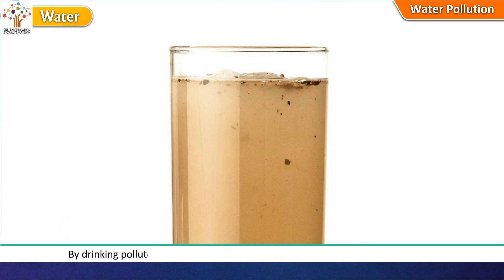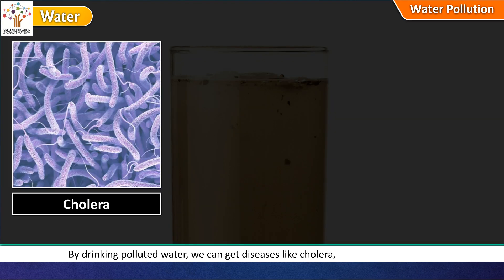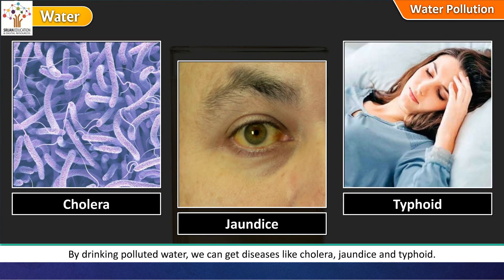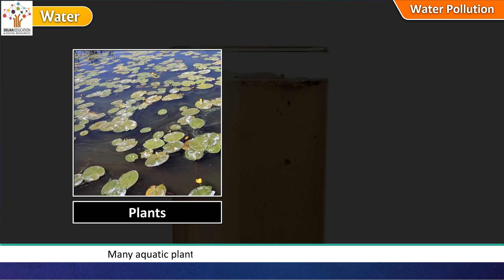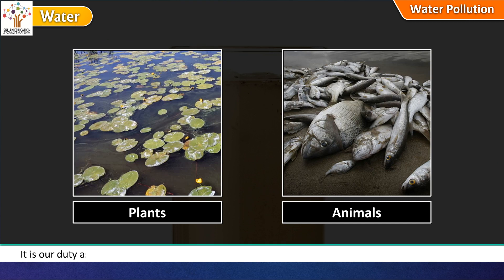By drinking polluted water, we can get diseases like cholera, jaundice and typhoid. Many aquatic plants and animals die because of water pollution. It is our duty as citizens to prevent water pollution as it is harmful to plants, animals and human beings.